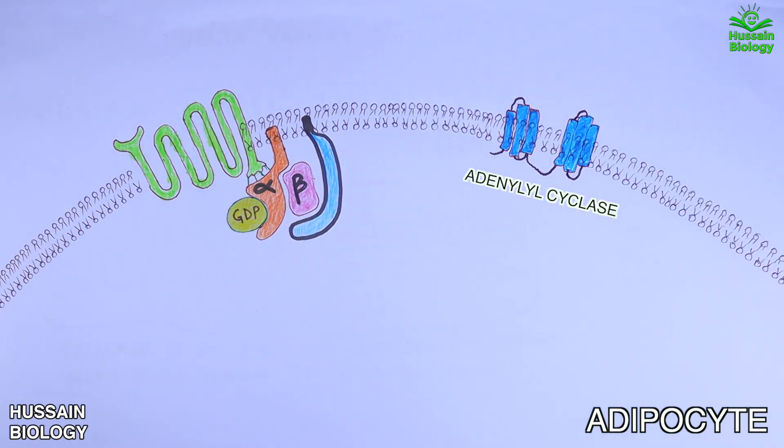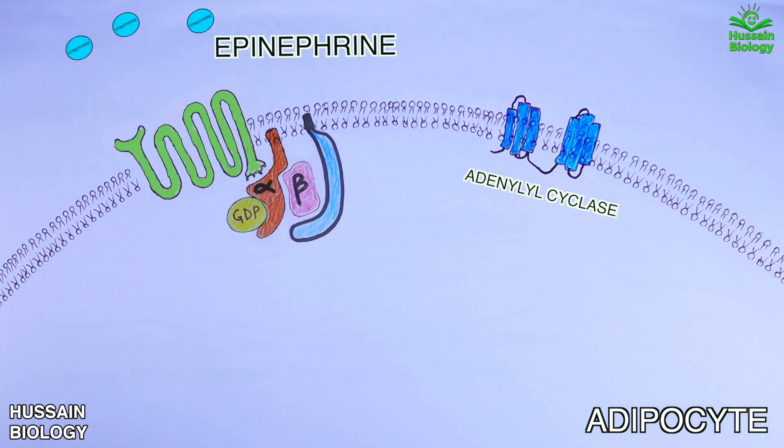To initiate or induce the pathway we must have low levels of glucose which triggers the release of glucagon, or this pathway is induced by high epinephrine levels and low insulin levels in the blood. So when we have low levels of insulin, the epinephrine comes in and binds with the GPCR protein.